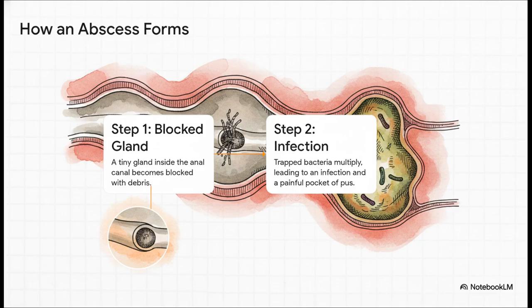Step one: one of those little glands gets clogged up. Step two: bacteria, which are totally normal to have there, get trapped inside. And because they have nowhere to go, they start to multiply — and boom, you've got an infection, a pocket of pus. That is your abscess.